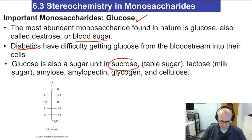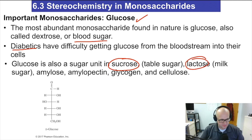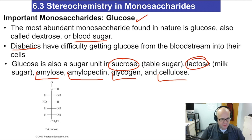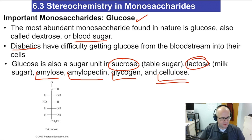Sucrose is one you all know and love — that's table sugar. Lactose, for those of you who are lactose intolerant, is a dairy sugar. Amylose, amylopectin, glycogen, and cellulose are all polysaccharides. Amylose and amylopectin are commonly referred to as starch; glycogen is found in the liver of animals including humans and also in muscle; and cellulose is plant fiber. They're all made of glucose.